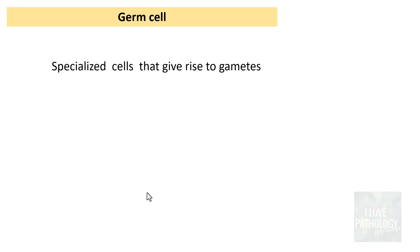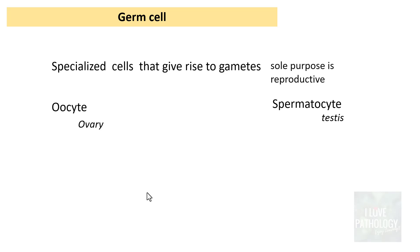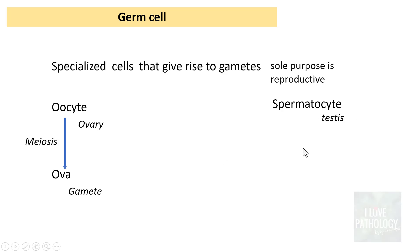What is a germ cell? As you all know, these are specialized cells that give rise to gametes — their whole purpose is reproductive in nature. Oocytes and spermatocytes are germ cells in the ovary and testis respectively. The oocyte undergoes meiotic division to give rise to the ovum, which is the gamete. Similarly, spermatocytes give rise to spermatozoa. That is the concept of germ cells.